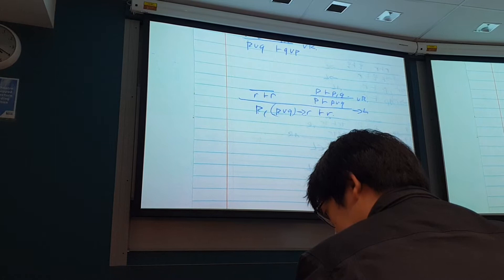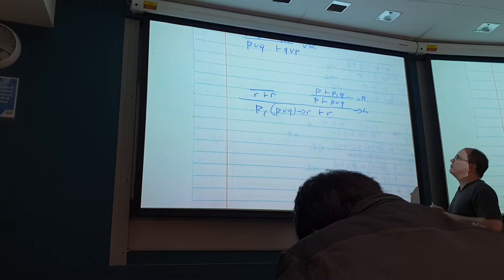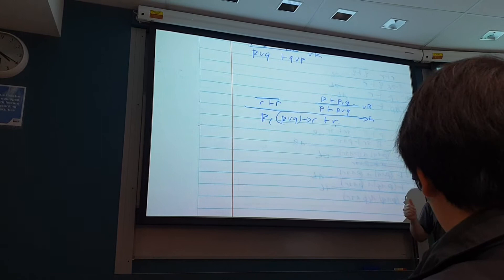So the other thing we can do is like we had conjunction where we got to choose which we wanted to keep. We have disjunction where we get to choose which we keep. Which of course is our standard disjunction introduction rule from natural deduction.